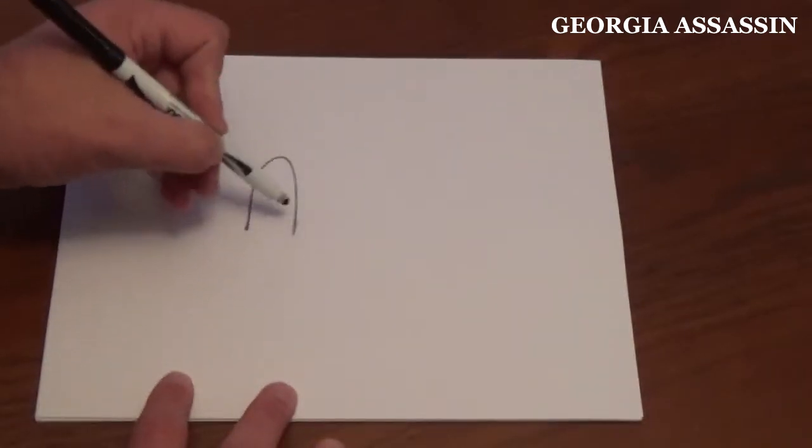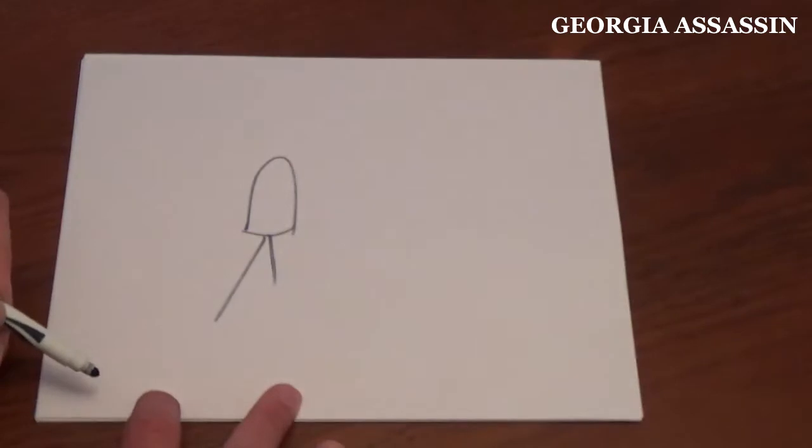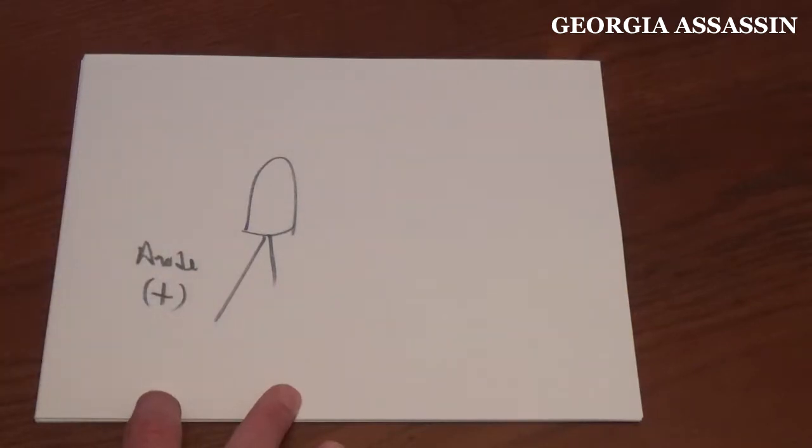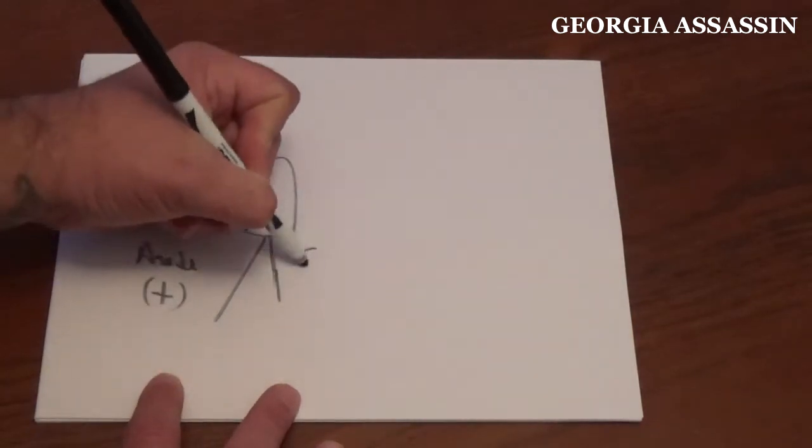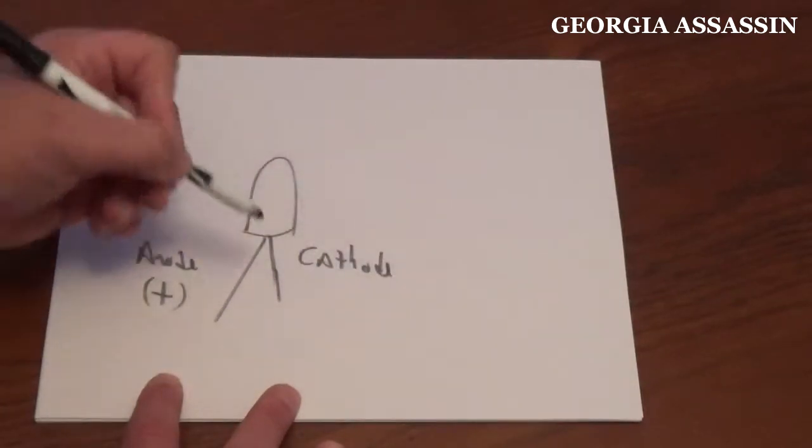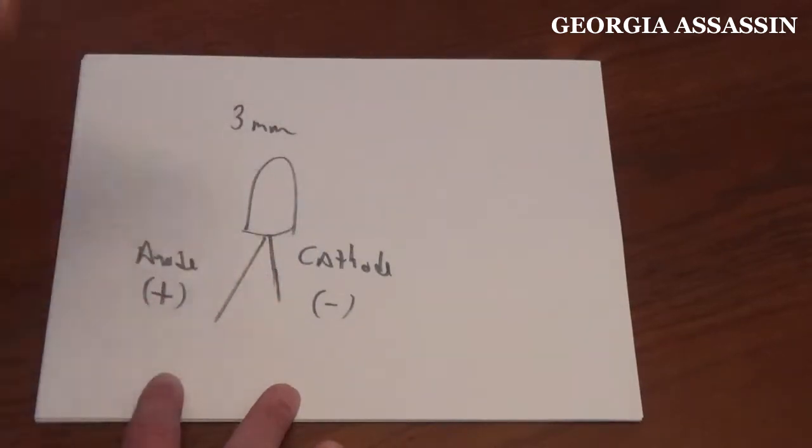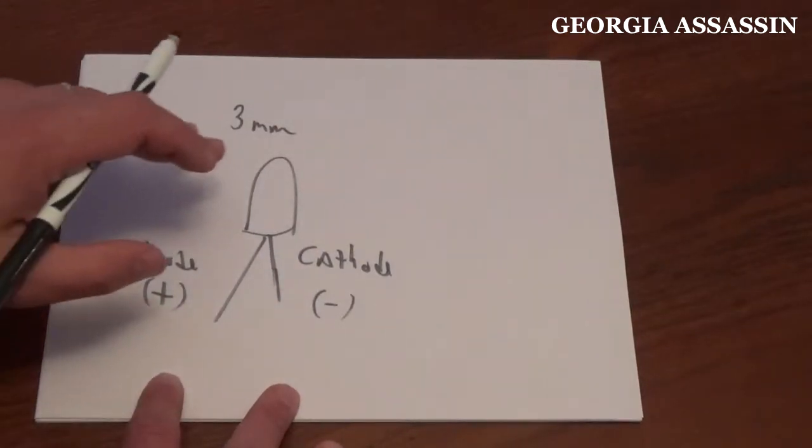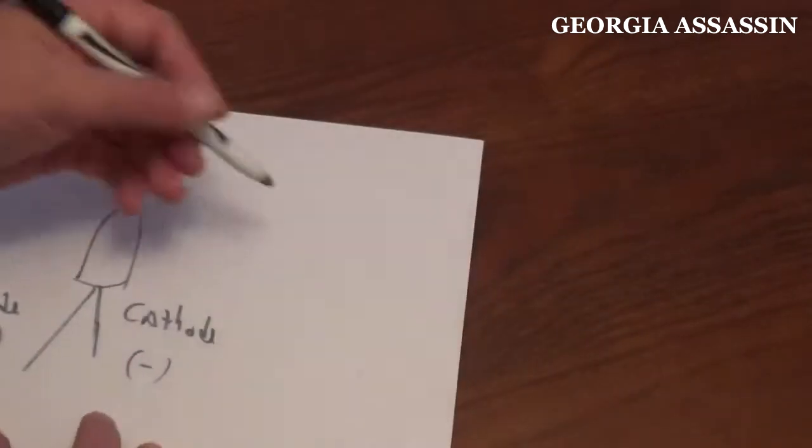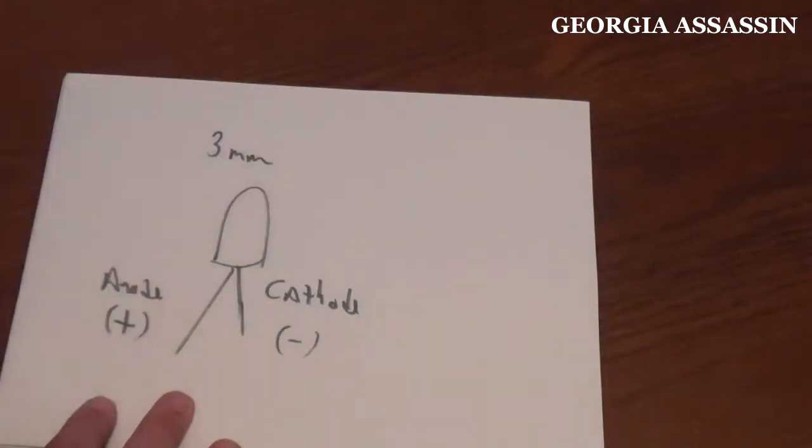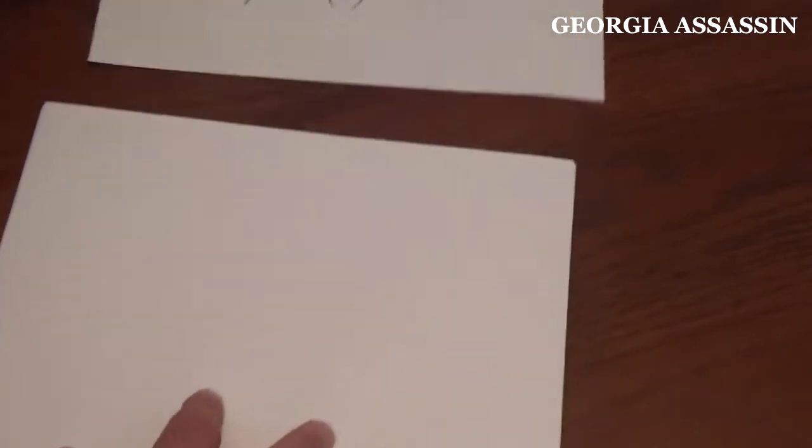Alright so we're going to break these components down for you real quick. I'm going to draw you an LED real fast. Excuse the primitive drawing. That's your LED. The longer leg is called the anode and it's going to have a positive input. The shorter leg is called a cathode and it's going to represent negative. I would recommend using a 3mm LED. You can get them pretty much any style, any shape. That's an LED. That's how it works. Power, ground.